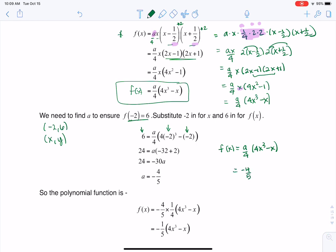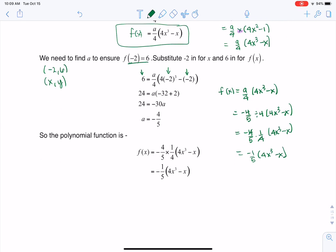well, that's negative 4 fifths divided by 4, but dividing by 4, we're going to see is like multiplying by 1 fourth. So I have 4x cubed still minus x, so this is negative 4 fifths times 1 fourth times 4x cubed minus x. The 4s cancel. And then you see that my function is ultimately negative 1 fifth times 4x cubed minus x. And that's where I'm getting this final answer.